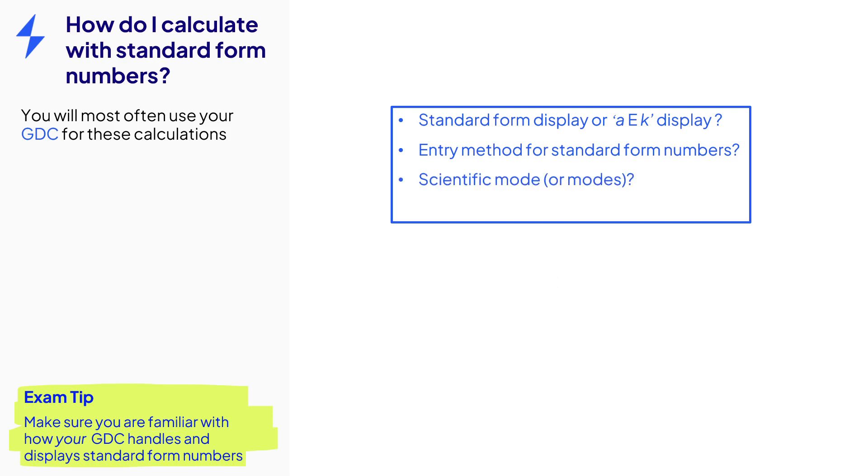Now scientific mode is something your calculator may have. These are modes where standard form may become the default, or that handles calculations in certain ways. If you're going to use this type of mode on your GDC, you need to be familiar with how it works. And also significant figures are something to look out for.